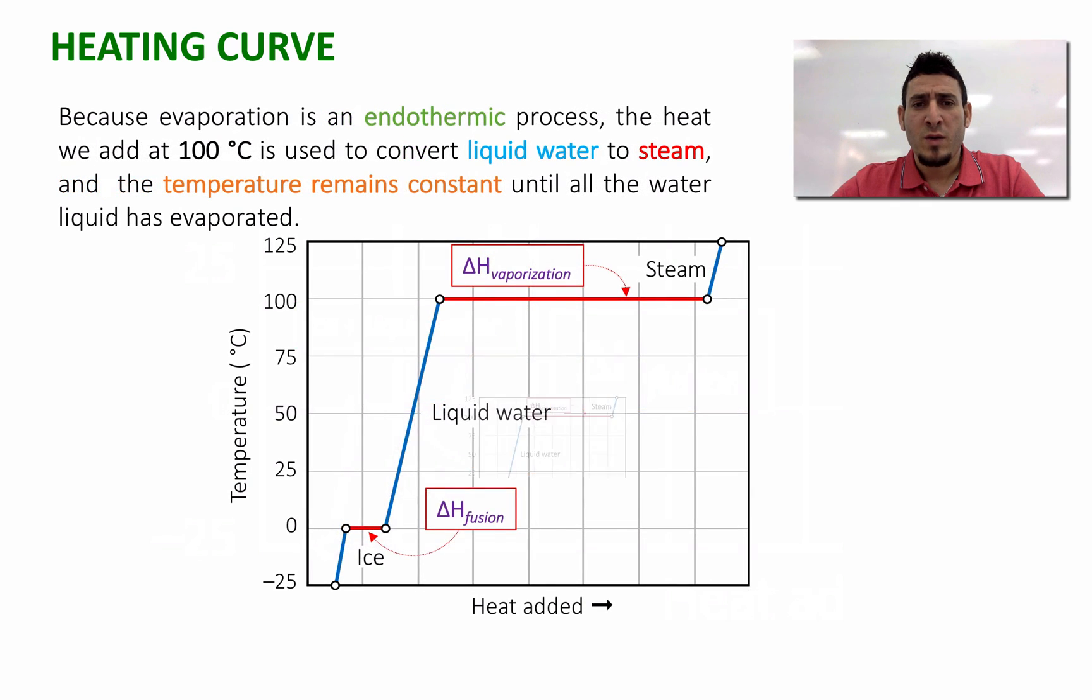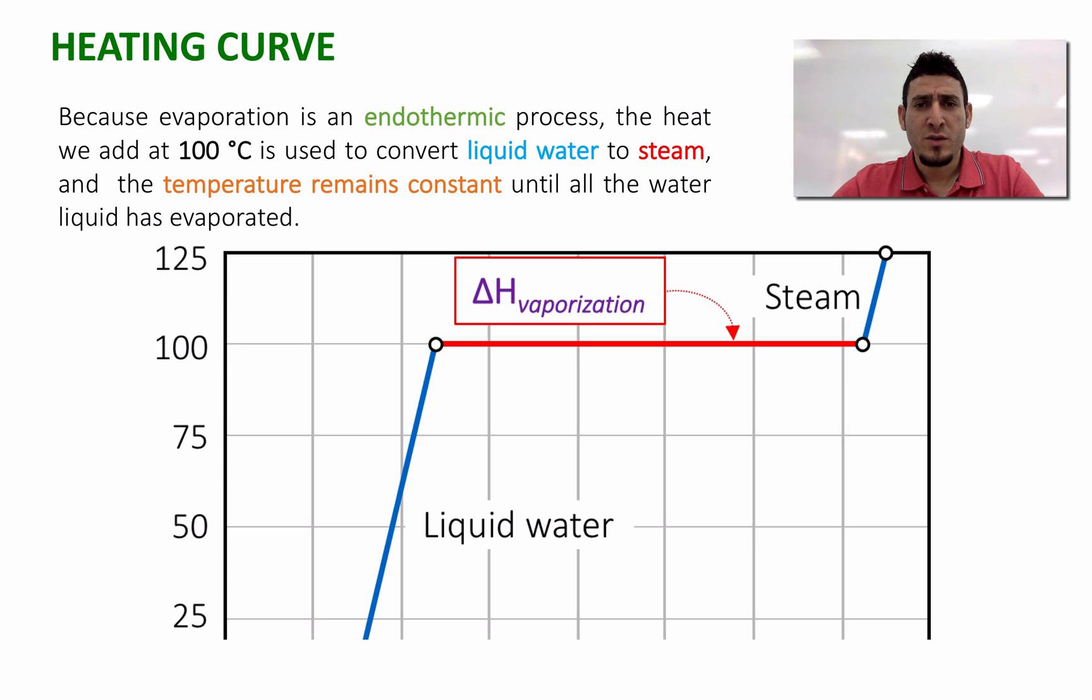We can ask the same question: why is the temperature not changing at 100 degrees? This is again because evaporation is also an endothermic process. The heat we add at 100 degrees is used to convert liquid water to steam, and the temperature remains constant until all the water has evaporated. And in this area, water exists also under two states: liquid water and steam.